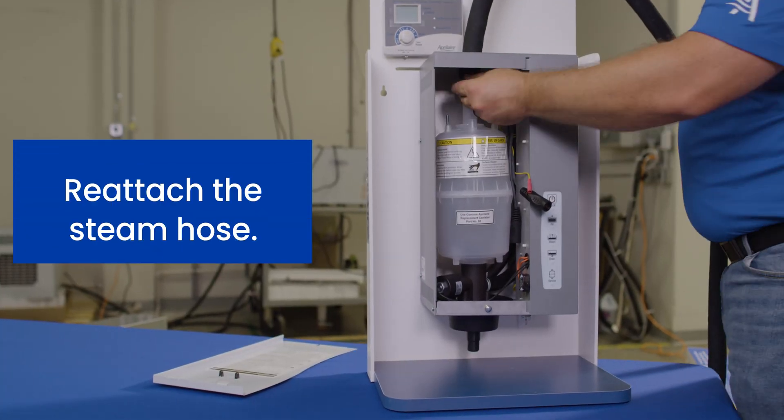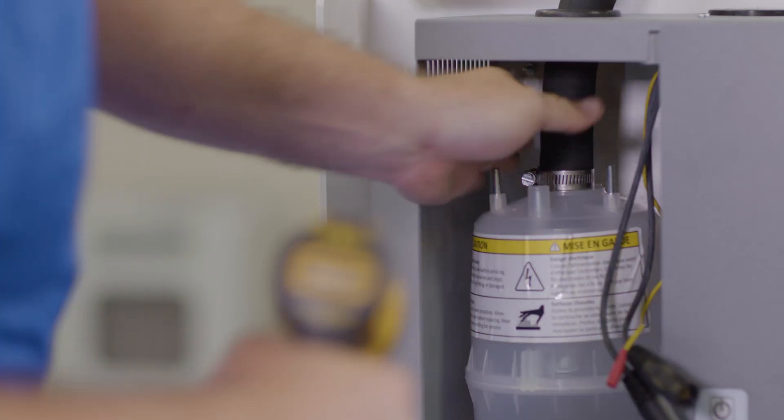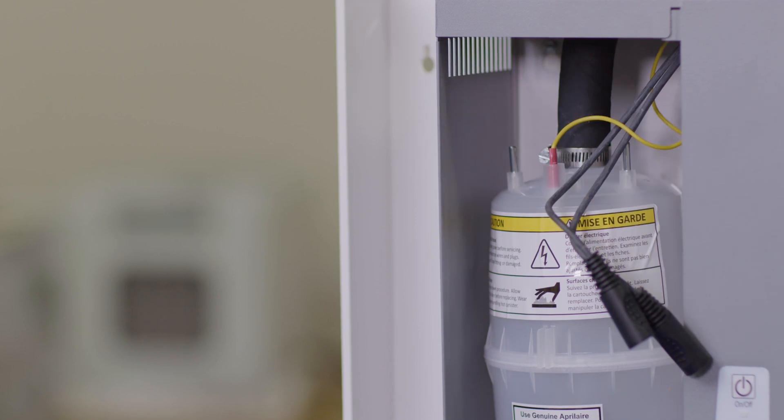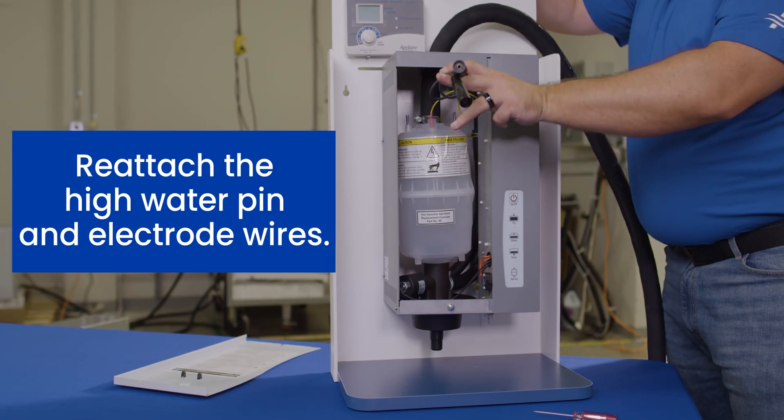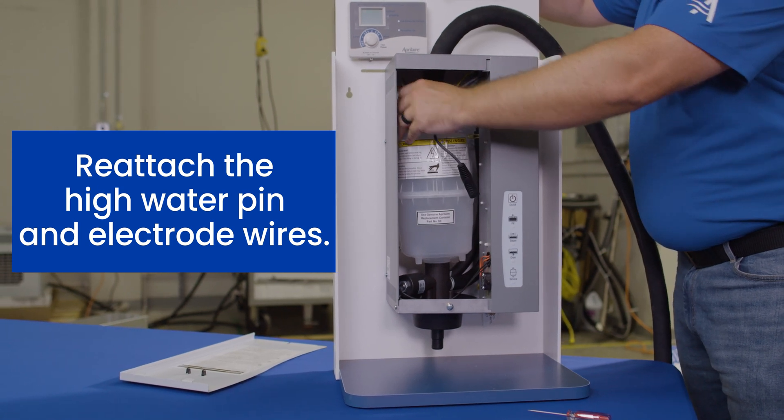Slip the steam hose over the top of the canister and tighten the hose clamp. Reattach the high water pin to the front pin and then reattach the two electrode wires. Again, it doesn't matter which one goes where, just attach them and push them all the way down so that they're nice and secure.